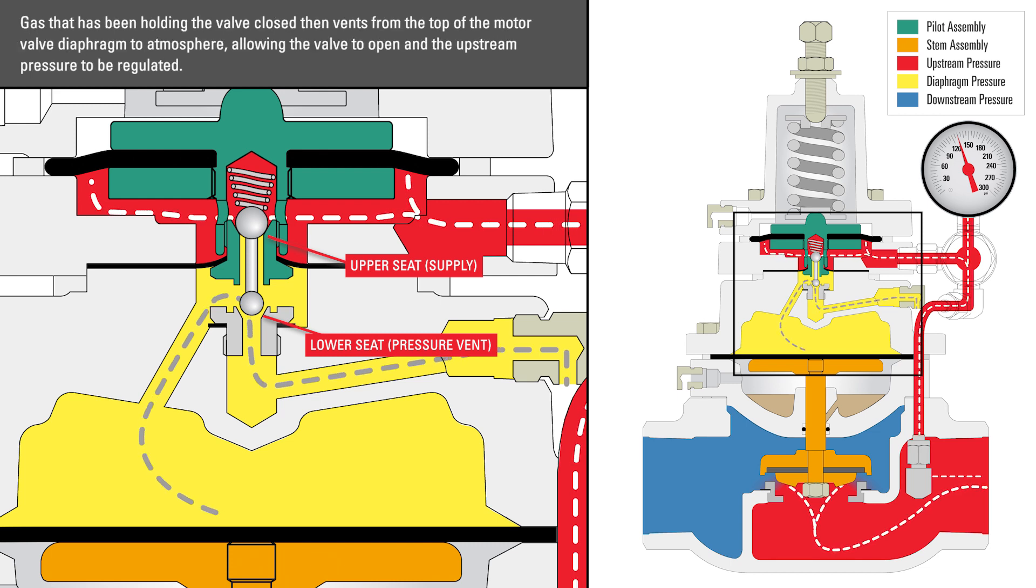Gas that has been holding the valve closed then vents from the top of the motor valve diaphragm to atmosphere, allowing the valve to open and the upstream pressure to be regulated.